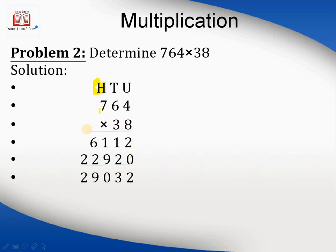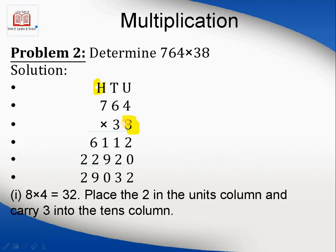First, multiply like the previous case. 8 times 4 is 32. Place the 2 in the units column and carry the 3. I recommend you always write the carry, because when the question becomes complex, we sometimes forget the carry in our mind and the answer is wrong.